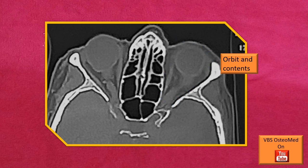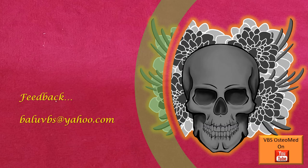The orbit and its contents — the eyeball and optic nerve — are clearly visible. That was an overview of Norma frontalis part 3, with the focus on the nasal region.